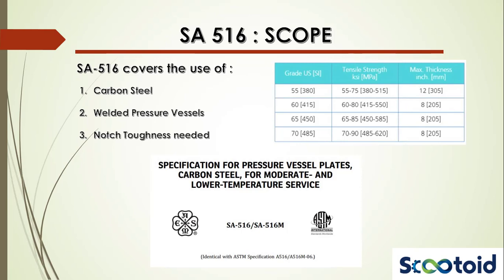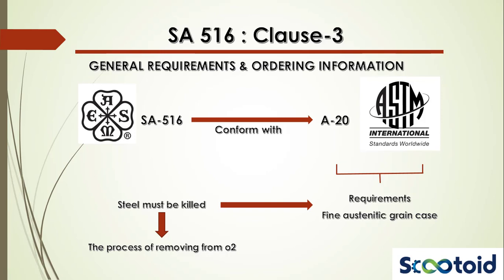A key point mentioned in the scope is that SA 516 covers the use of carbon steel for welded pressure vessels where improved notch toughness is needed. It is available in four grades with corresponding tensile strength, and maximum plate thickness is shown. The clause on general requirements and ordering specifies that SA 516 needs to conform to the specification A20 of the ASTM standard.